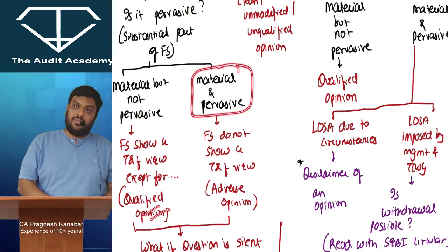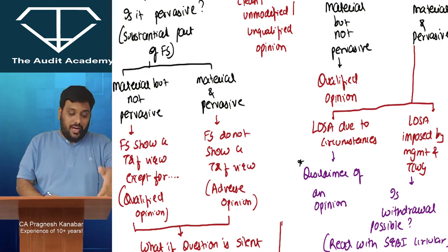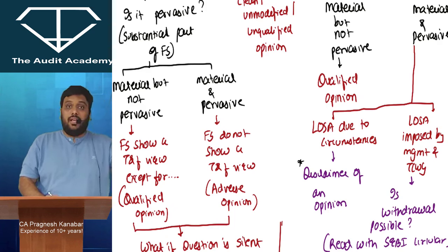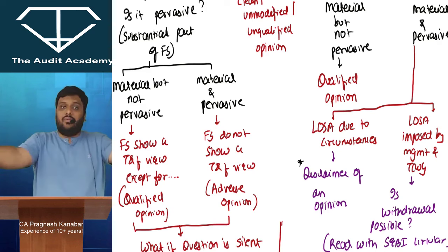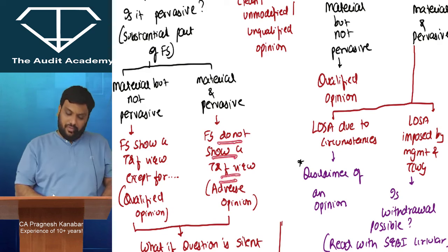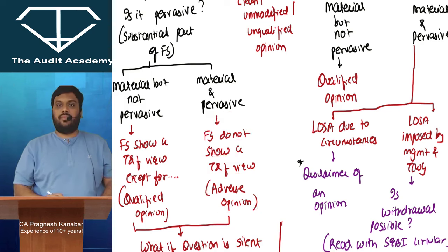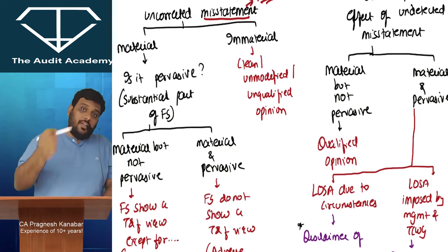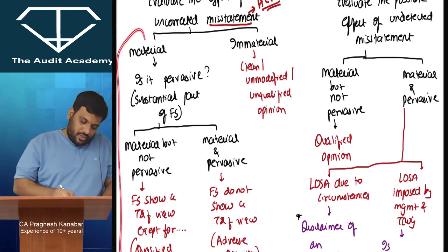Whenever a person falls sick it could be malaria or cancer — the key is the level of sickness. If inventory is overvalued and it is 4% of total assets, it is material but not pervasive. Pervasive means something that covers a substantial part of the financial statements — like if admissions data in a coaching class is wrongly recorded, that is material and pervasive. Material and pervasive leads to adverse opinion.